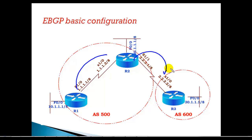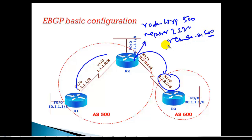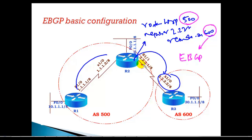In our previous scenarios, we configured eBGP between two routers — for example, between Router 2 and Router 3. We go to router BGP with AS number 500, configure a neighbor command with the neighbor address 2.2.2.2, then set remote-AS to 600. When the AS numbers differ, the router automatically understands it has an external BGP neighbor.